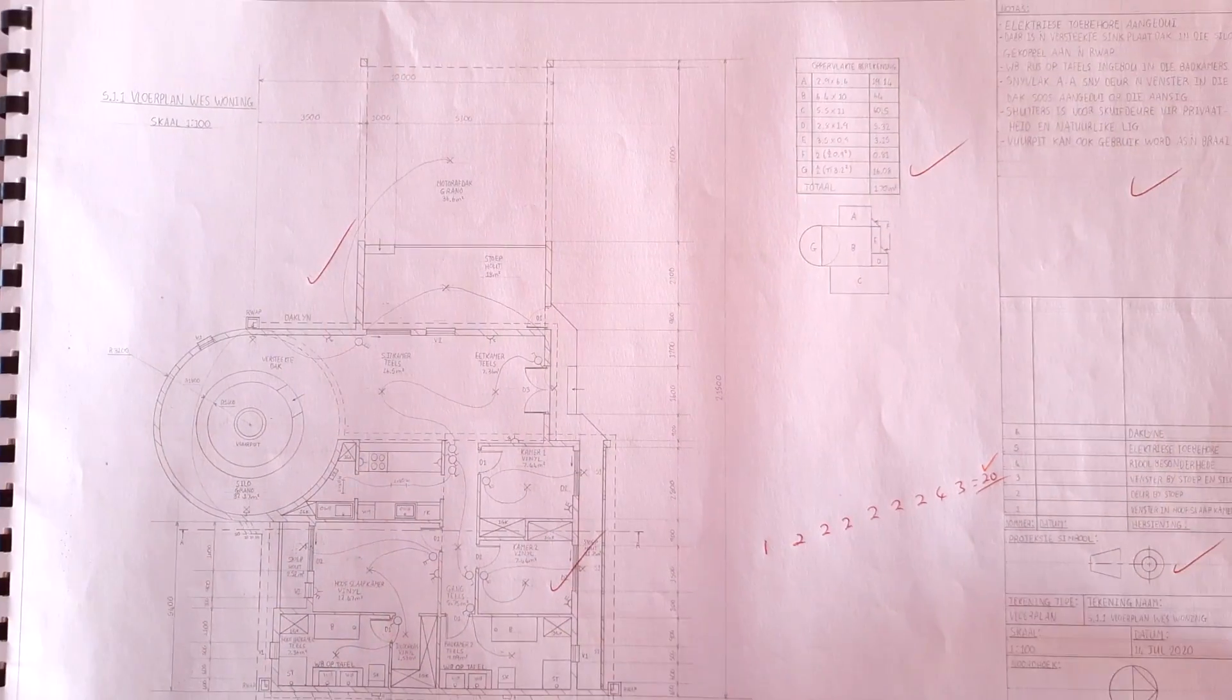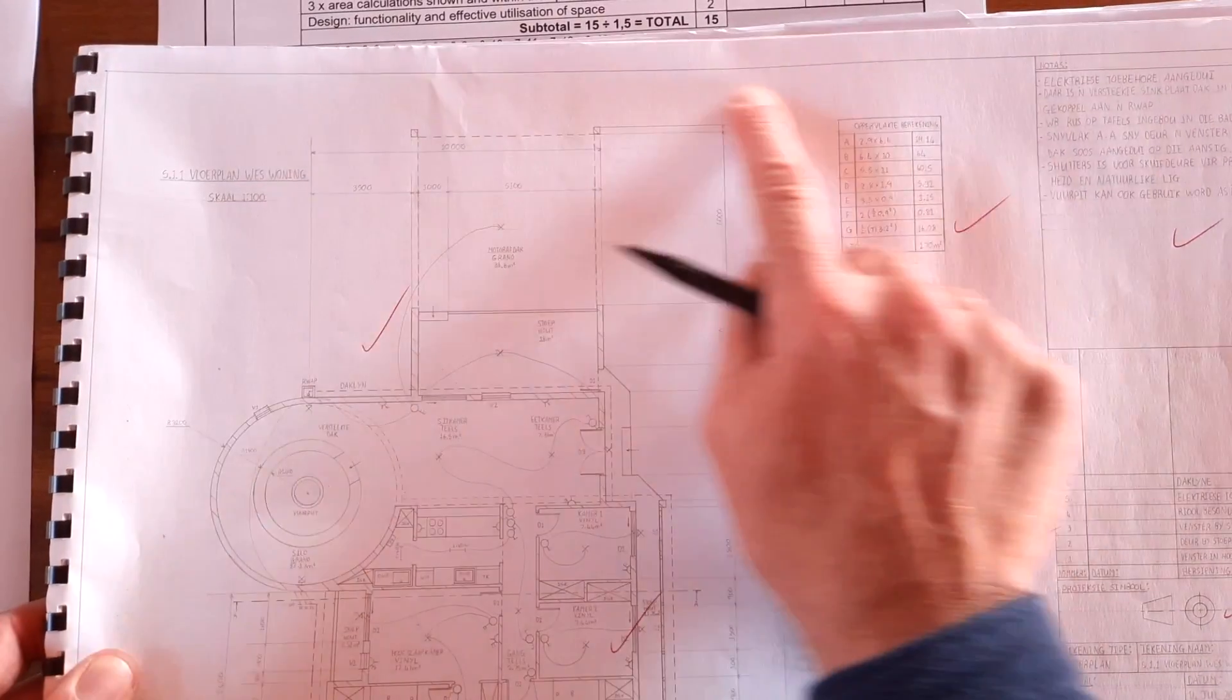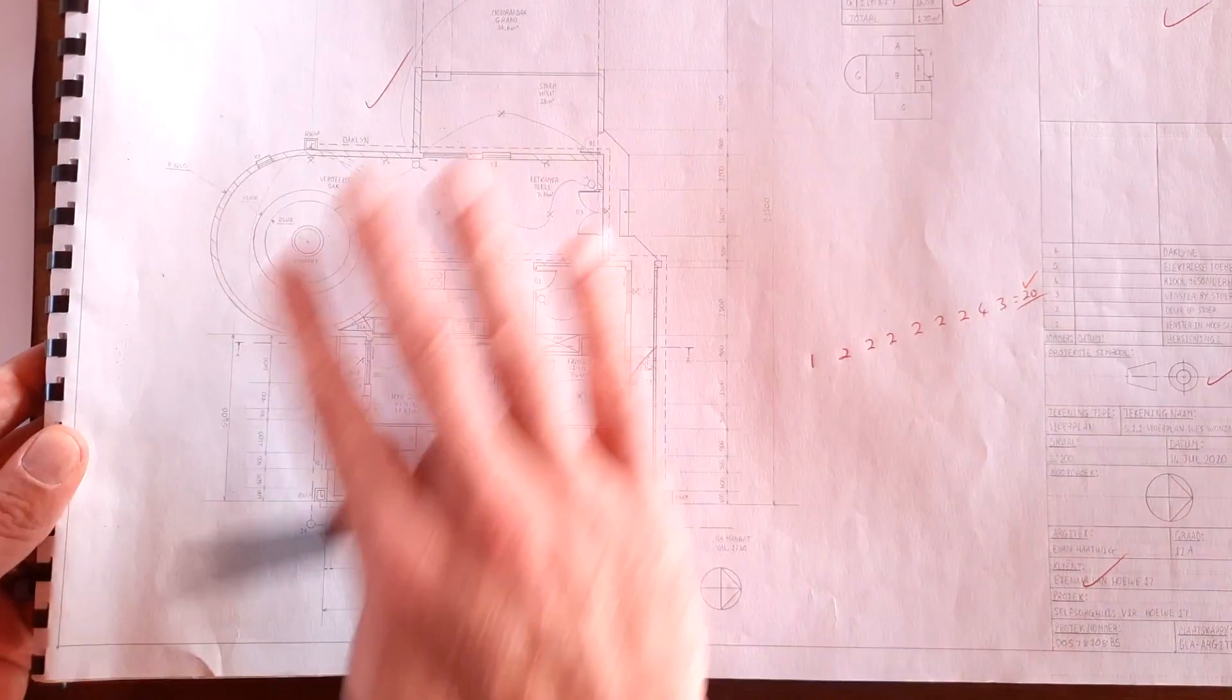Let me page to another example, which is hopefully a bit clearer. Again, we're going to go with the overview. We've got our border here, title block on the one side, and then the actual drawing.